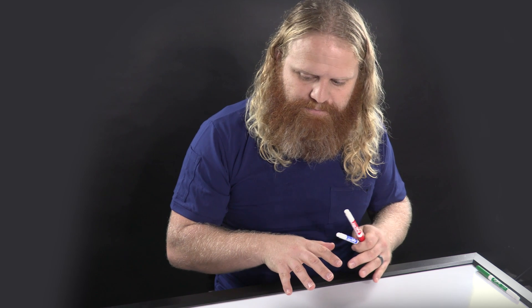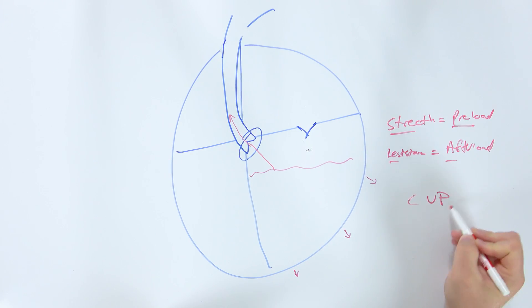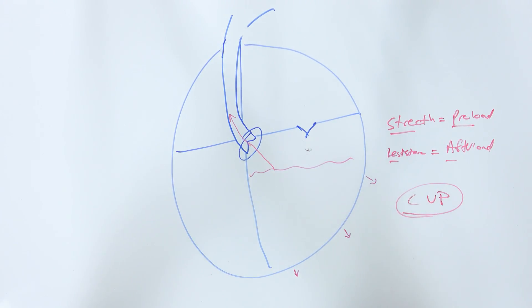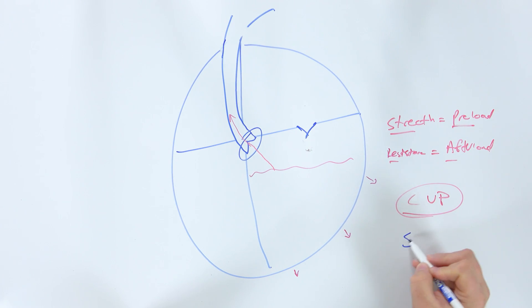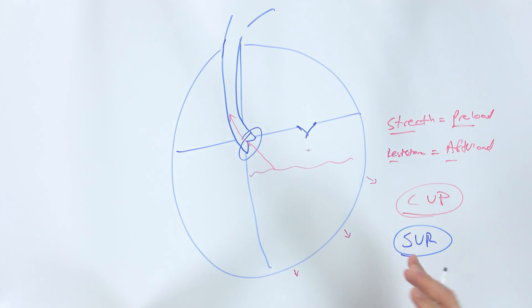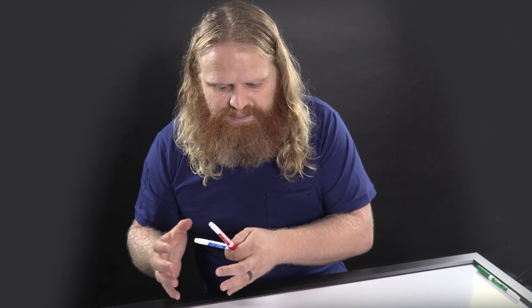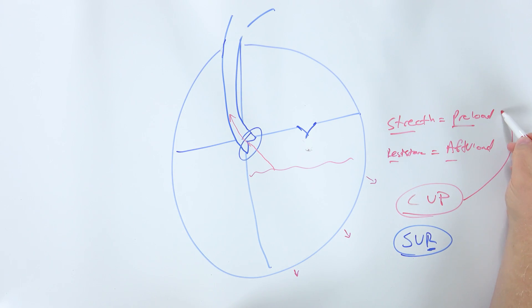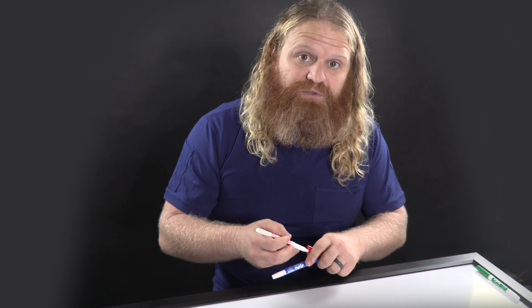So with those two things in mind, let's talk about how we measure them. Preload is measured with central venous pressure — it's that stretch, that pressure built up as we stretch those ventricles out. Afterload is measured with SVR, or systemic vascular resistance. So preload is central venous pressure, and afterload is systemic vascular resistance.